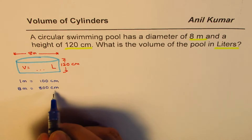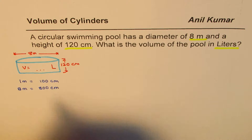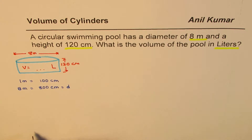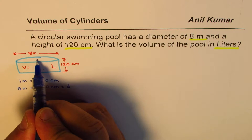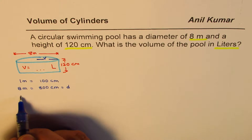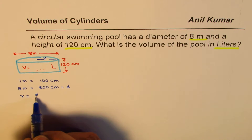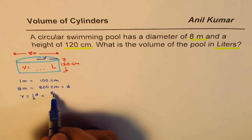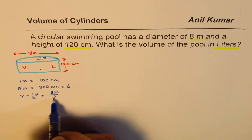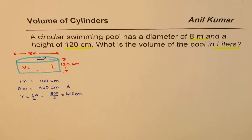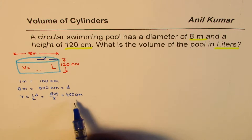This 8 meters is actually the diameter, so we write this as diameter D. Now, how about the radius? Radius is going to be half of it — radius equals half of diameter, or D divided by 2. So that will be 800 divided by 2, which is 400 centimeters. So now we have converted all the units to centimeters.